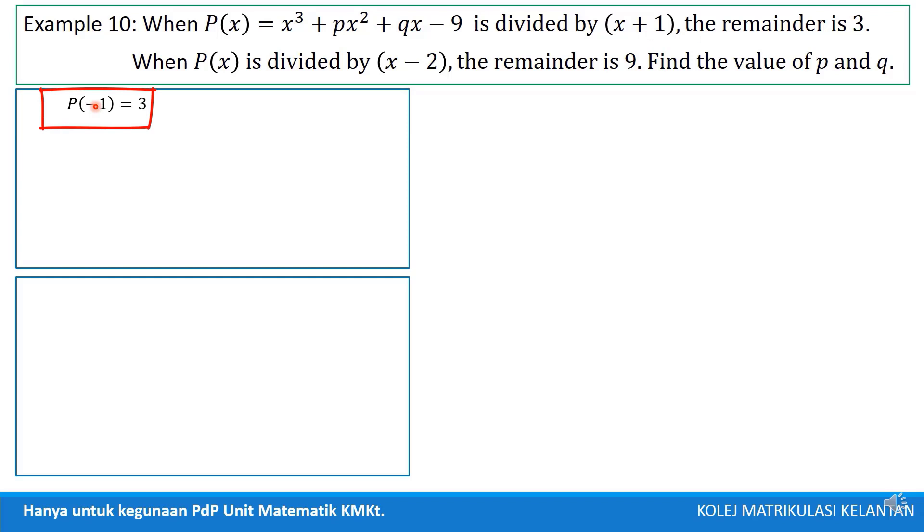So, it become like this. So, remainder theorem, P negative 1 equals to 3. Then, if we write into the polynomial form, then we get P equal to Q times x plus 1 plus R. So, this remainder is equal to 3.